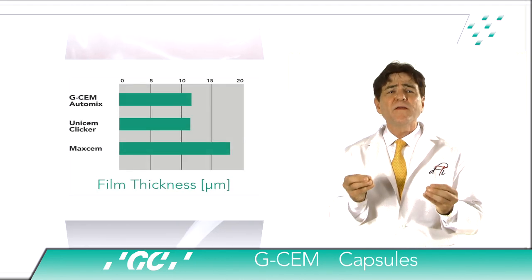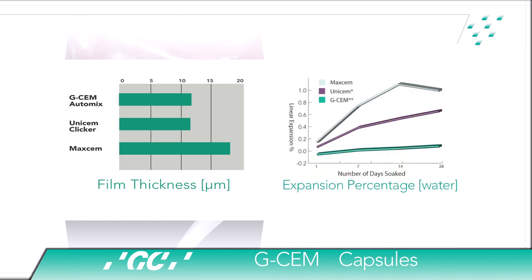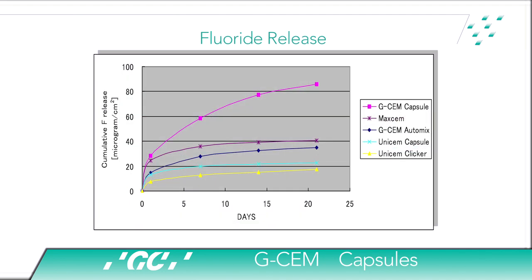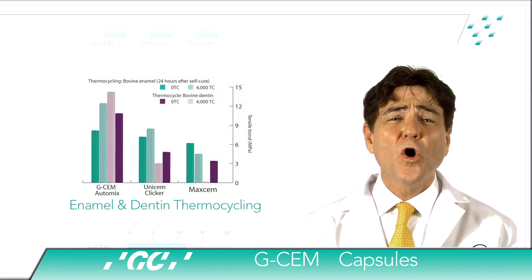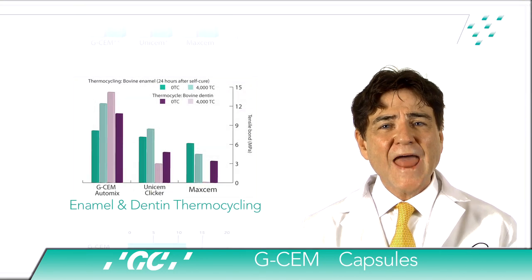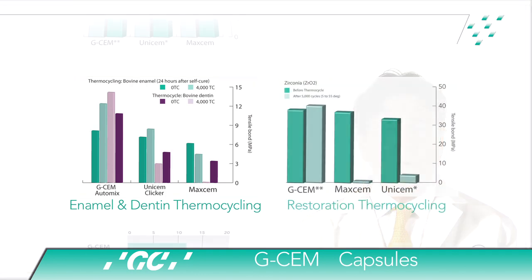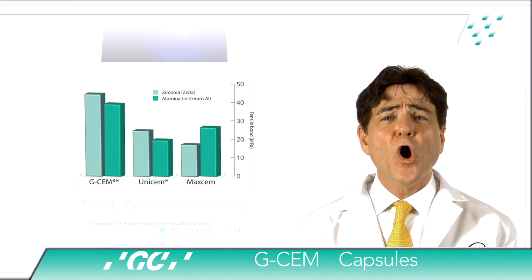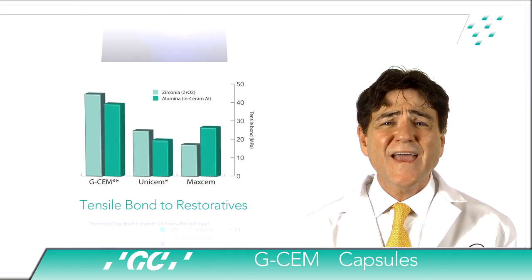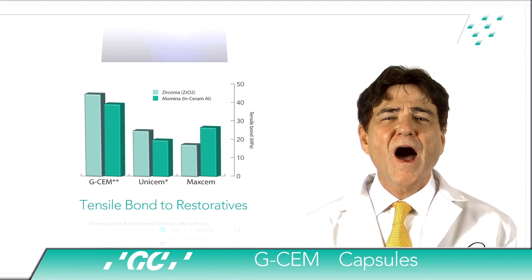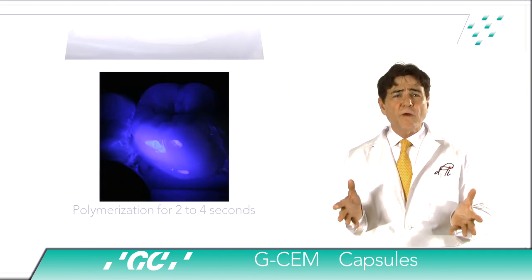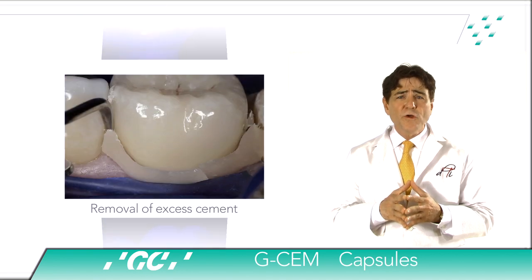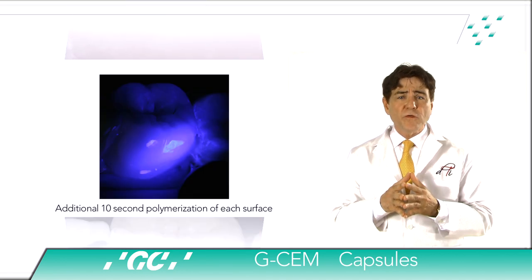GCM possesses the lowest film thickness and linear expansion of any self-adhesive system and provides the highest fluoride release. Seto et al. at the University of California reports it is the only self-adhesive system that actually improves bond strength to dentin, enamel, and zirconia restorations after thermal cycling, while Matsumoto et al. at GC R&D reports that GCM not only has high bond strength but also high bond stability to ceramics. The following clinical scenarios demonstrate the utilization of GCM automix and capsule to bond ceramic restorations to the supporting tooth structure.